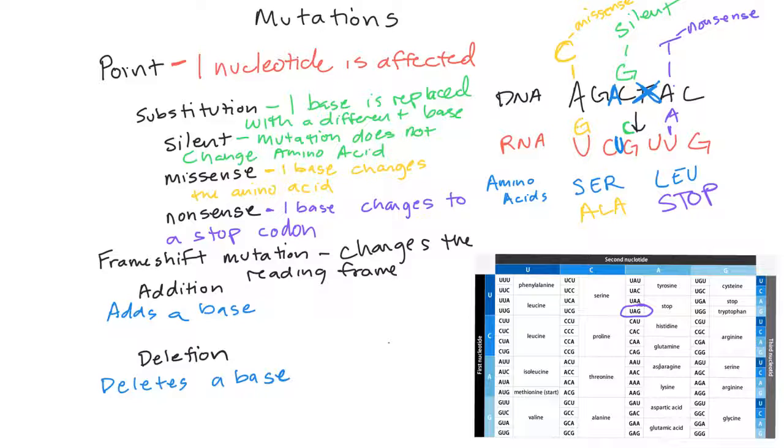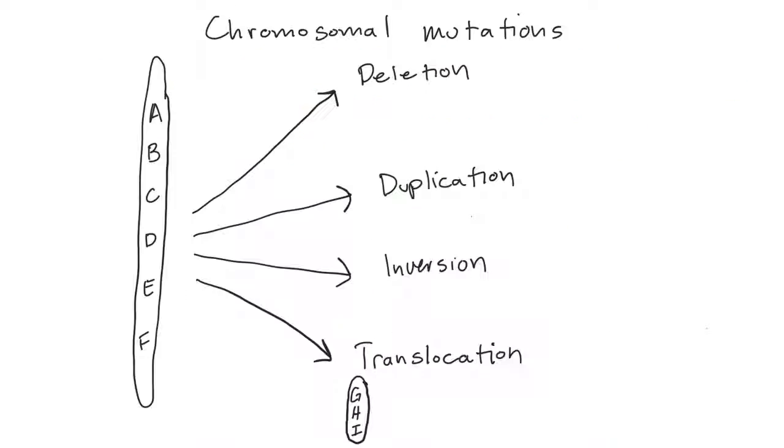So those are mutations that can occur to the DNA sequence, which has an effect on the amino acid sequence, or the protein being made. We're going to skip over now to talk about chromosomal mutations. So the chromosomes themselves and the genes within them can also have, they aren't static either. They can also be shifted around.